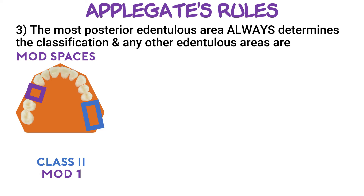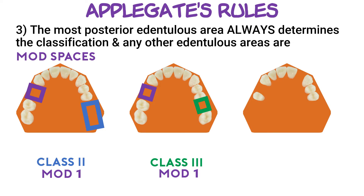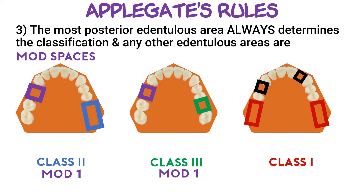In this example, we again have two edentulous spaces, but we take the one that's more posterior and classify according to that — so this one is Class 3 Mod 1. Here we have a bilateral posterior edentulous space, which will make this a Class 1 Mod 2.